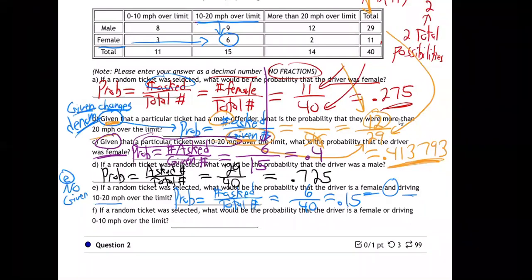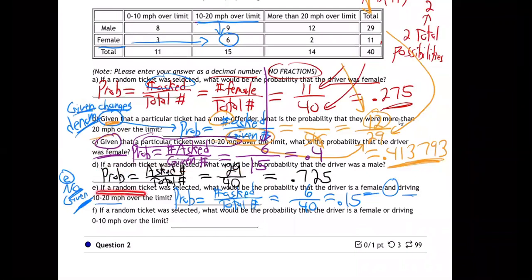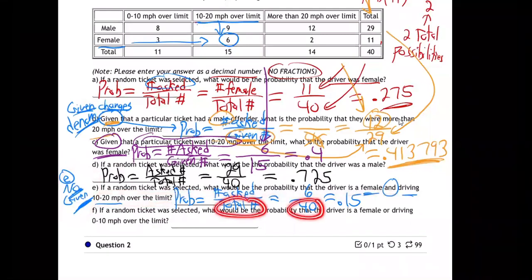I have a question — why would this total be 40 and not just all of the females? The total is 40 because this is not a given question. The denominator only changes when there's a given. Part B says given, part C says given, part D no given, part E no given — so because there's no given, the total goes back to 40 because they're talking about everybody.